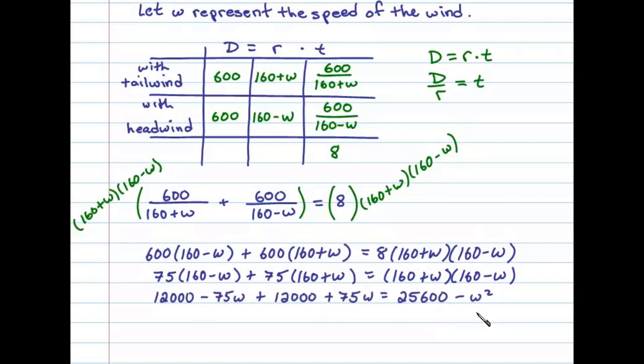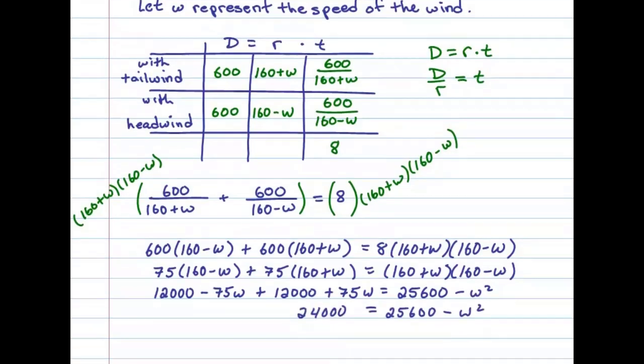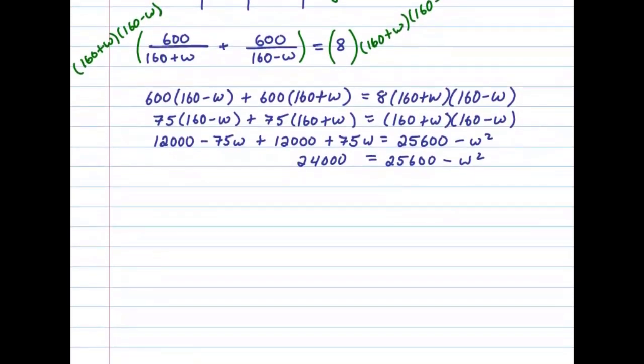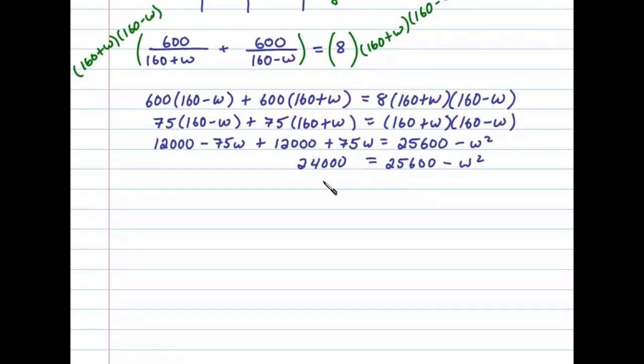Now, at this point, we will apply the distributive property to both sides of this equation and then collect like terms. We can see that we can solve for W by extracting the square root. Let's subtract 25,600 on both sides.